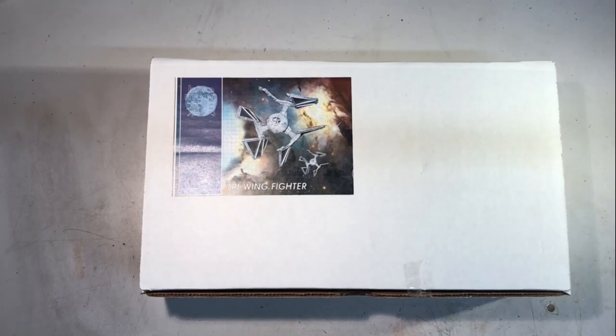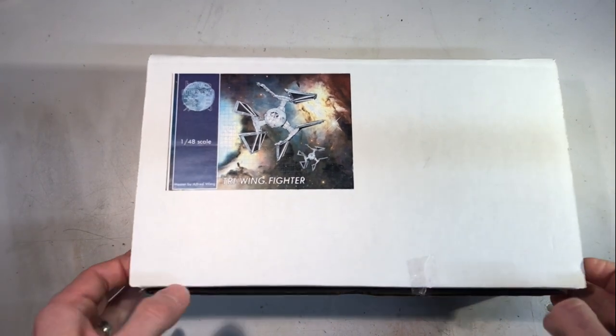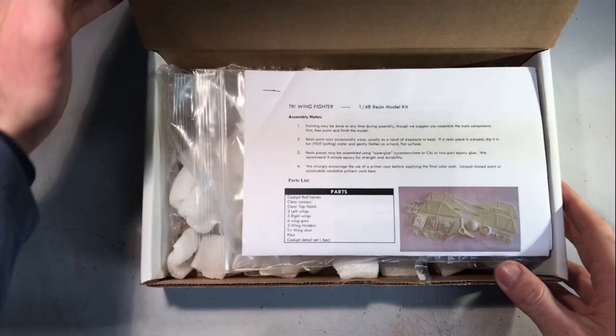Hello everyone and welcome at Matt's workshop. In today's video we are going to have a look at the three-wing fighter from Blue Moon. It's also named the TIE Defender, it's in 1:48 scale and it has been mastered by Alfred Wong. So let's have a look to the kit.